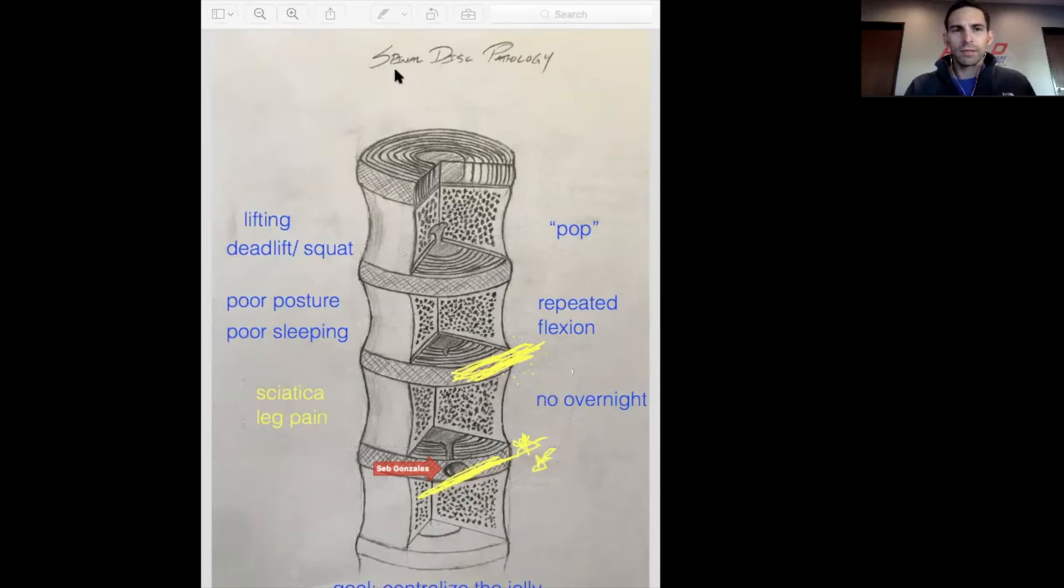One of the things that we commonly see with people like this is that we call it flexion intolerance. And if you've seen some of my other videos on flexion intolerance, I show you how to get out of bed, how to get out of the car, how to get onto the ground, how to walk, how to get out of a chair. Flexion intolerance really has to do with understanding your pain triggers.